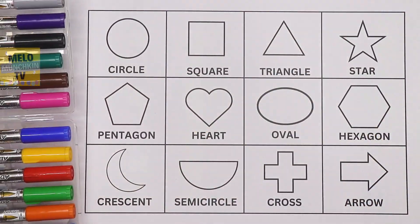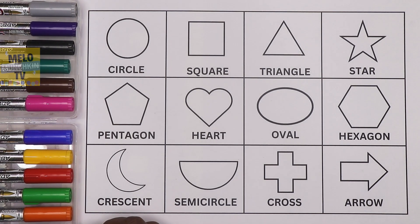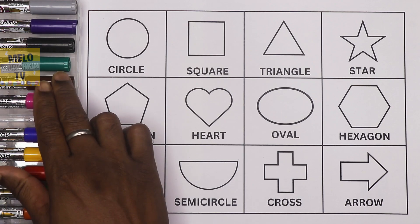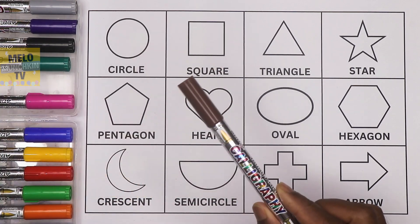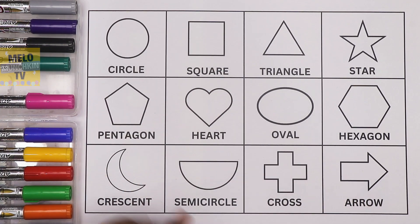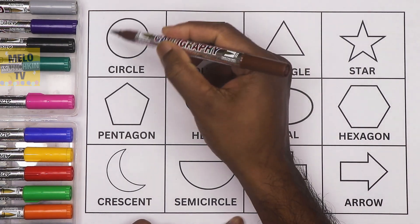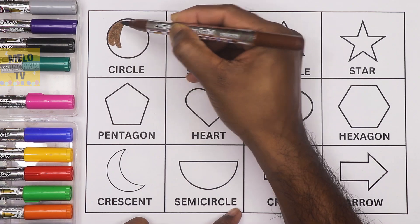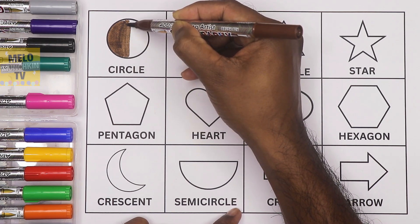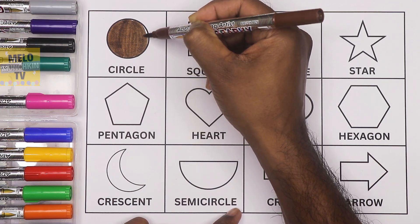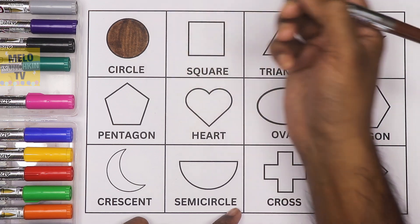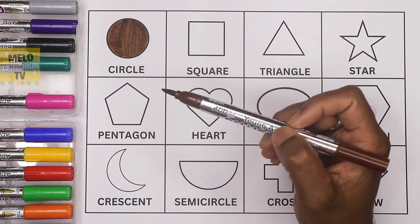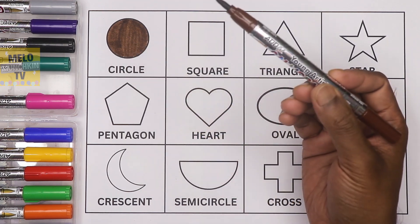So we have twelve shapes and twelve colors. Let's start coloring the shapes! First I'll take brown color — this is brown color — to color the shape called circle. This is circle shape, let's color it. Okay, so this is now a brown circle. The shape is circle and the color is brown.